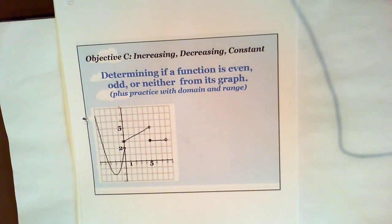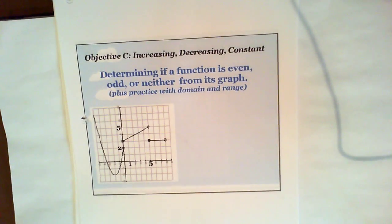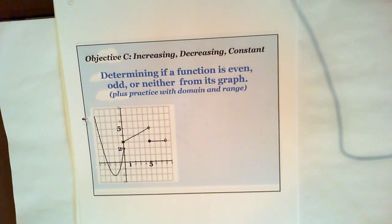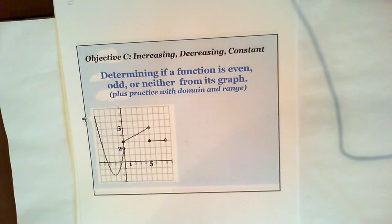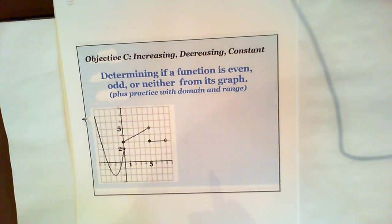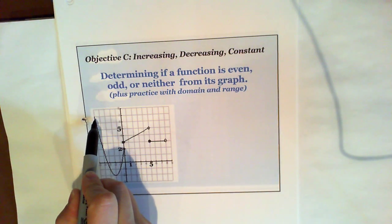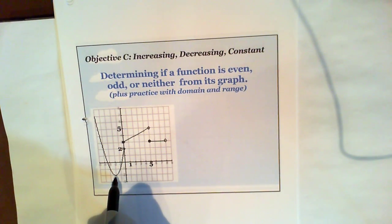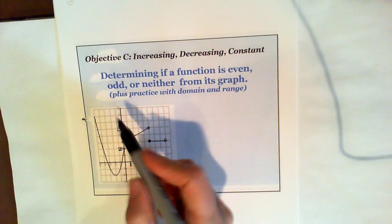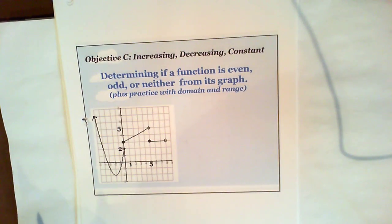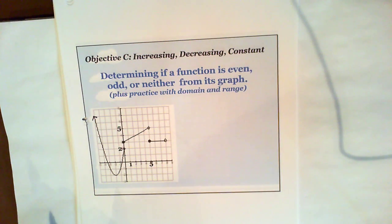Here's one example. If we had a function that's broken into different pieces — we're going to talk about piecewise functions in a couple classes. So this function here, if I wanted to know where it was increasing, decreasing, or constant — from left to right, if I follow it, it's looking like it's decreasing up to negative two. And over here on the end, there really should be an arrow implying that the function continues to go on in that direction.